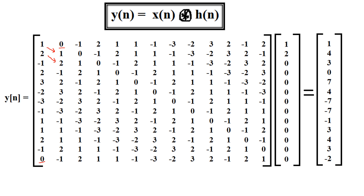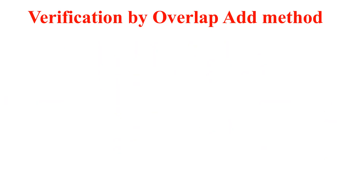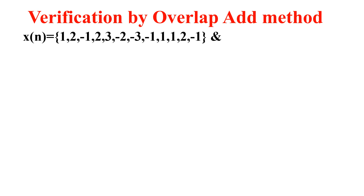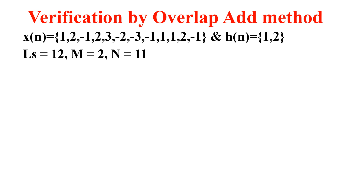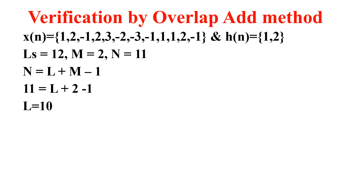This linear convolution result needs to be verified using the overlap-add and overlap-save methods. For the overlap-add method, x(n) has 12 samples and h(n) has 2 samples. The block size N is assumed to be 11. Using the formula N = L + M - 1, with M = 2, I solve to get L = 10. So out of the 12 samples in x(n), I take 10 elements per block.